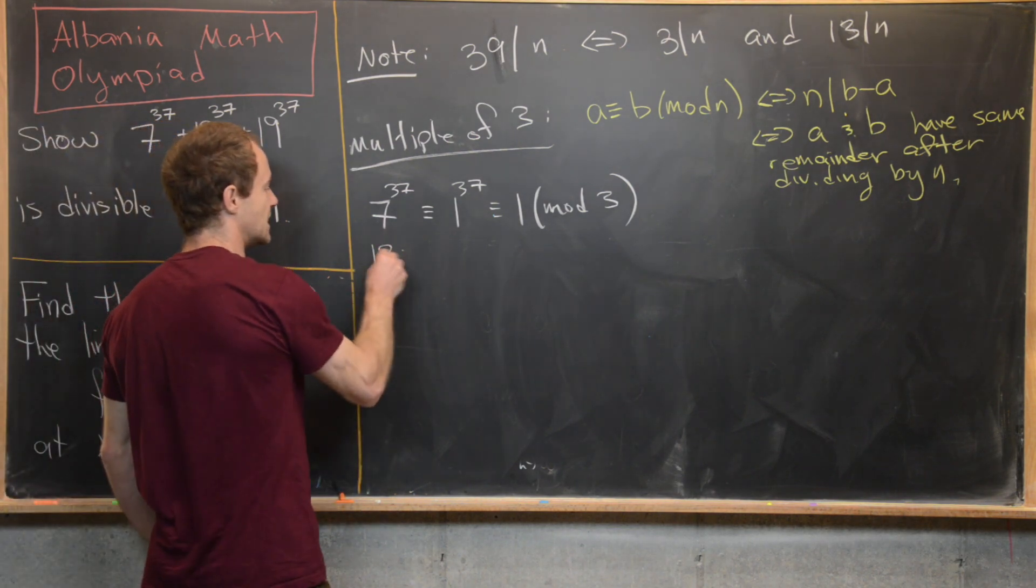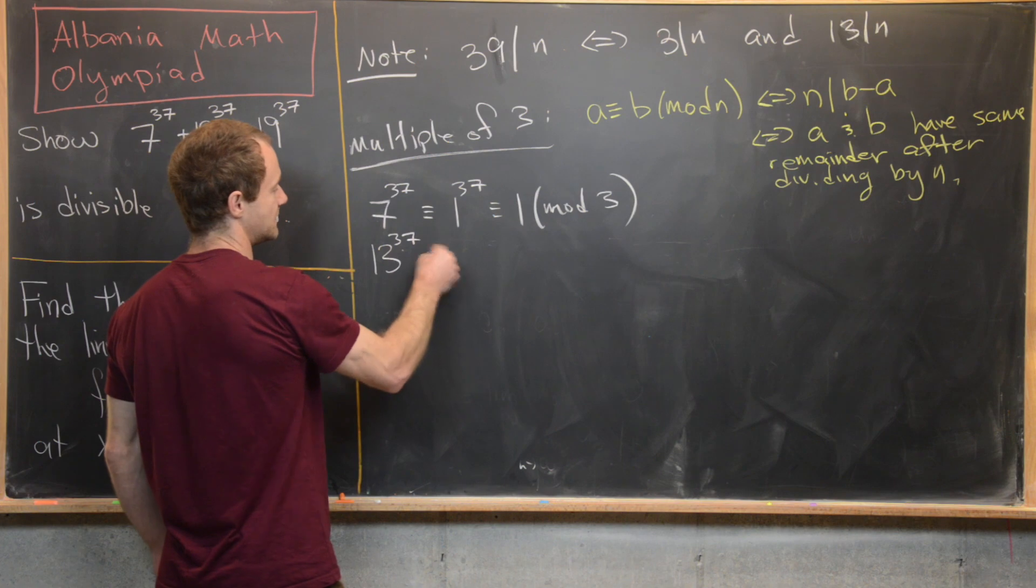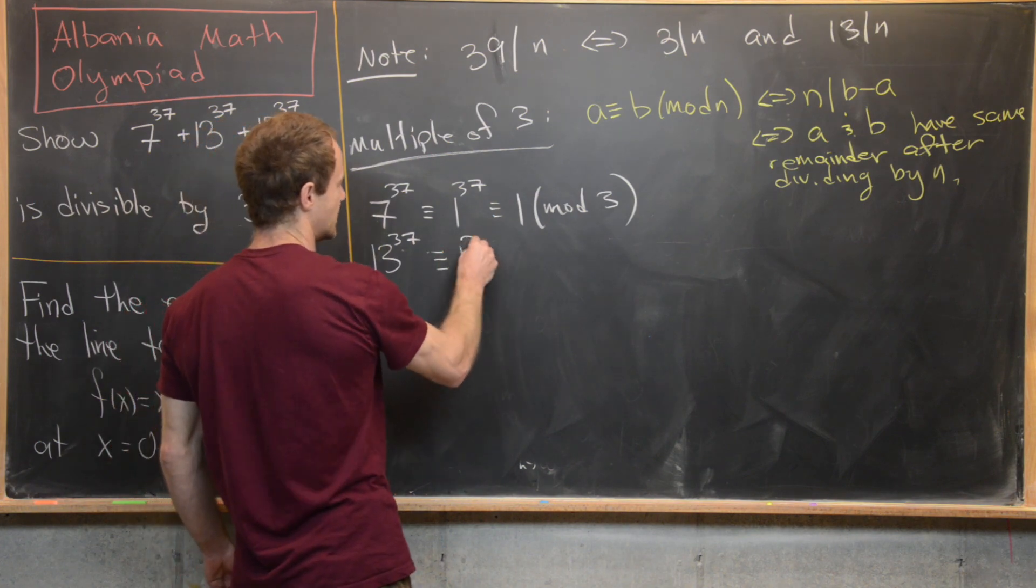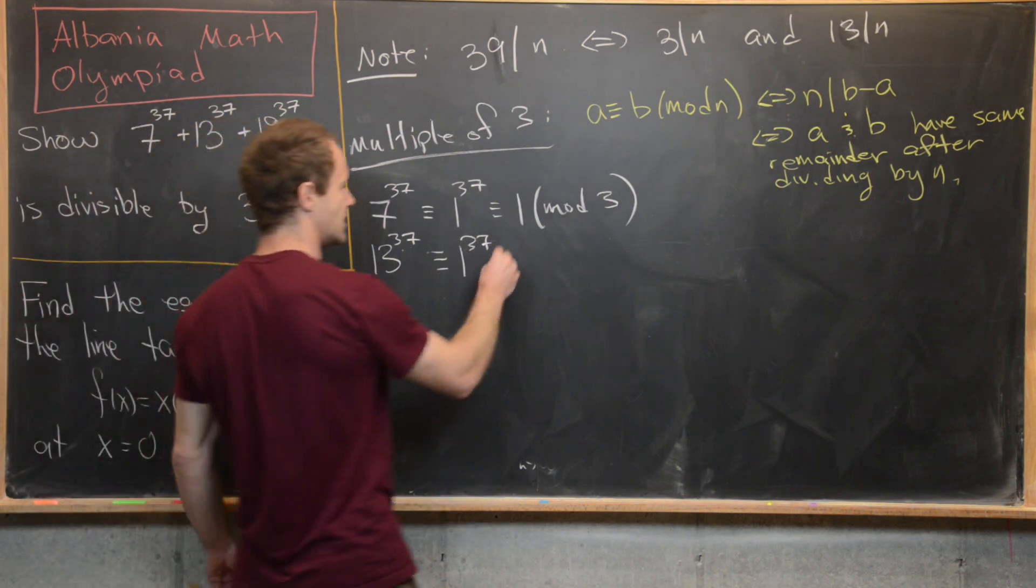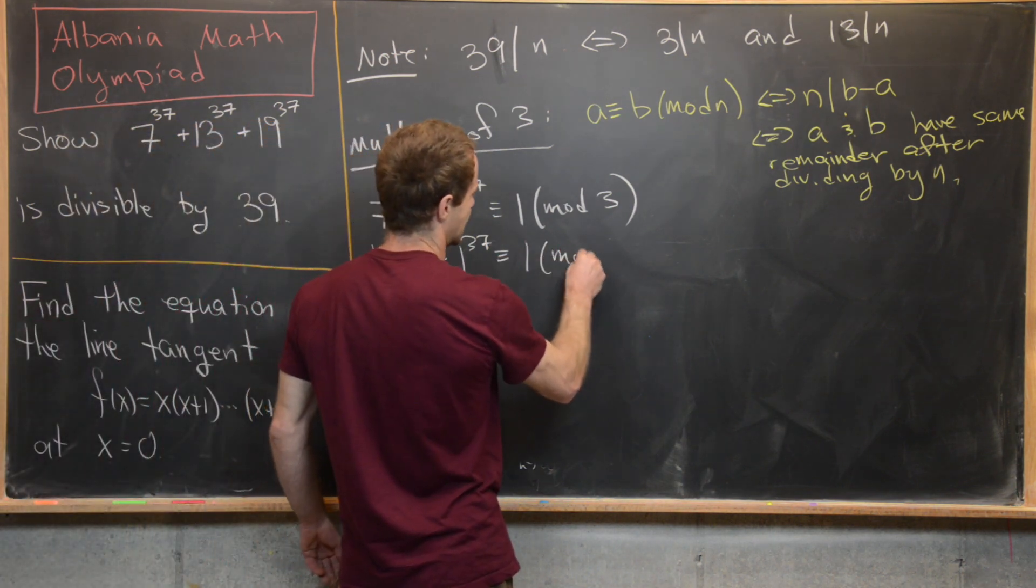And now we can continue that 13^37. So that's going to be the same thing as 1^37 mod 3 because 13 is 1 more than 12. But that's going to be 1 mod 3.